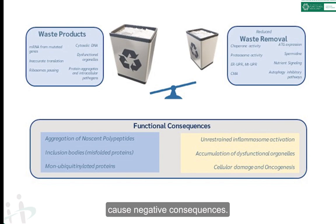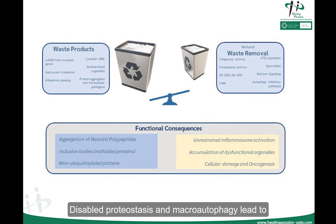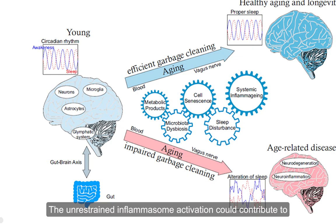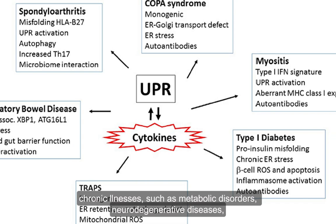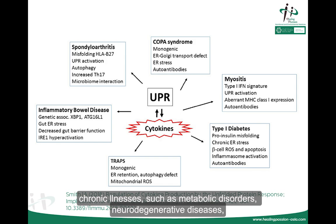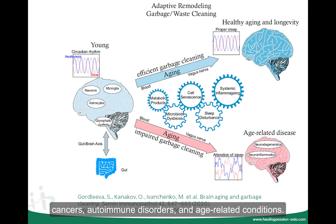Disabled proteostasis and macroautophagy lead to accumulated organelle dysfunction and damage. The unrestrained inflammasome activation could contribute to the chronic inflammation that underlies the pathophysiologic processes of chronic illnesses, such as metabolic disorders, neurodegenerative disease, cancer, autoimmune disorders, and age-related conditions.